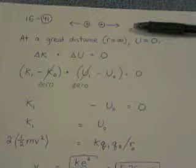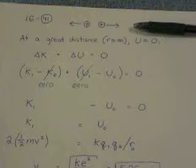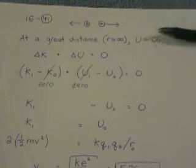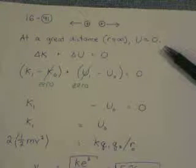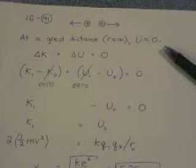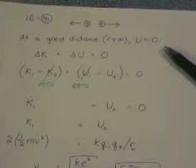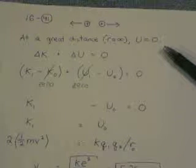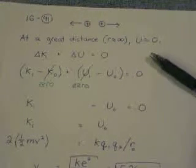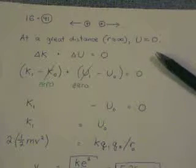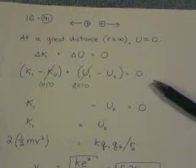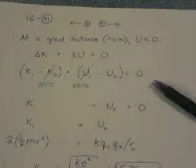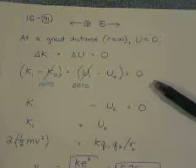Part B asks for what is their speed at a great distance. And we can say great distance, that's where r is approximately infinity. It doesn't need to literally be infinity, like all the way across the universe. But what it just means is enough to where potential energy is sufficiently close to 0. Conservation of energy says change of kinetic plus change of potential energy equals 0.